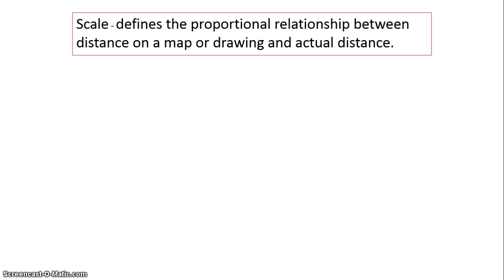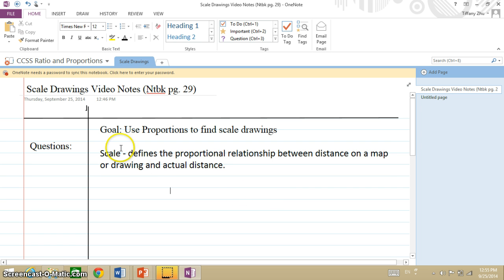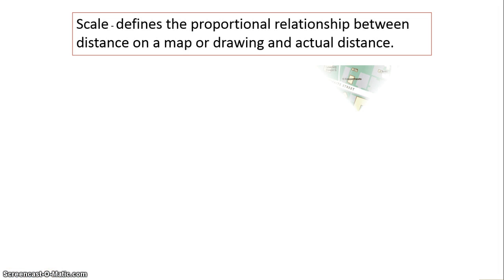In a scale drawing, first of all a scale is what defines the proportional relationship between the distance on a map or drawing and then the actual distance. As you already copied that definition into your notebook today, our goal basically is we're going to use what we already know about proportions to help us find scale drawings. Let's look at the first problem.